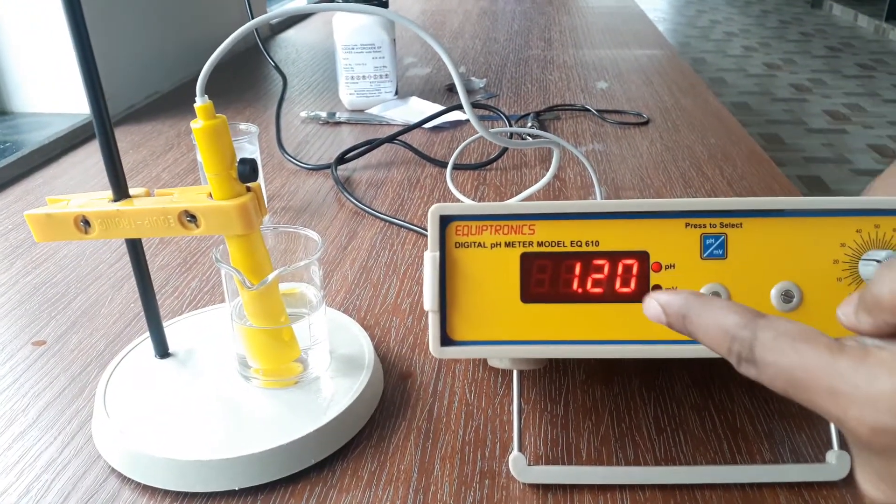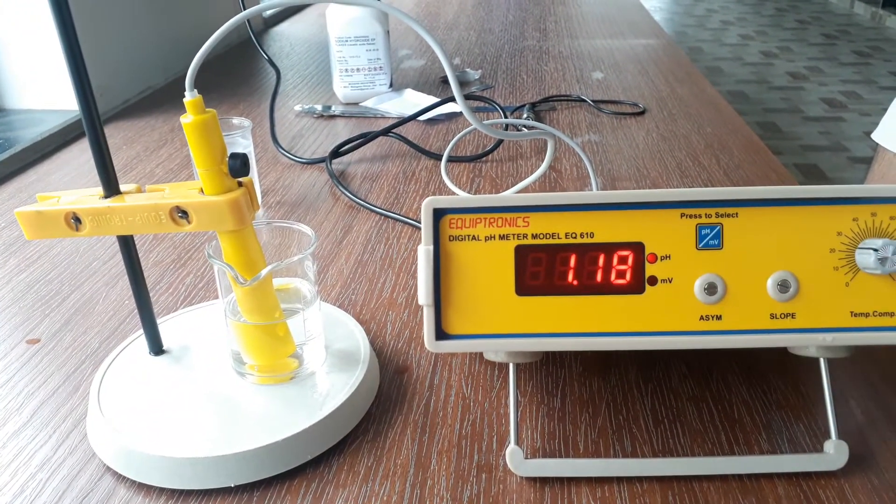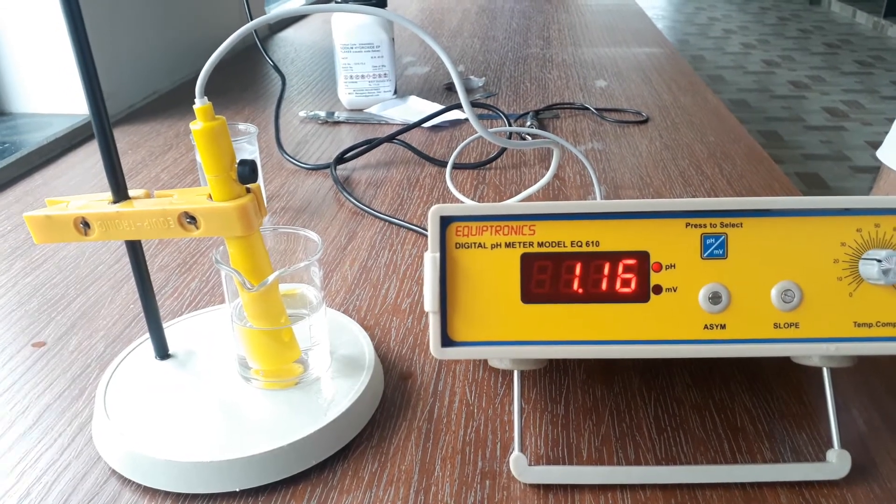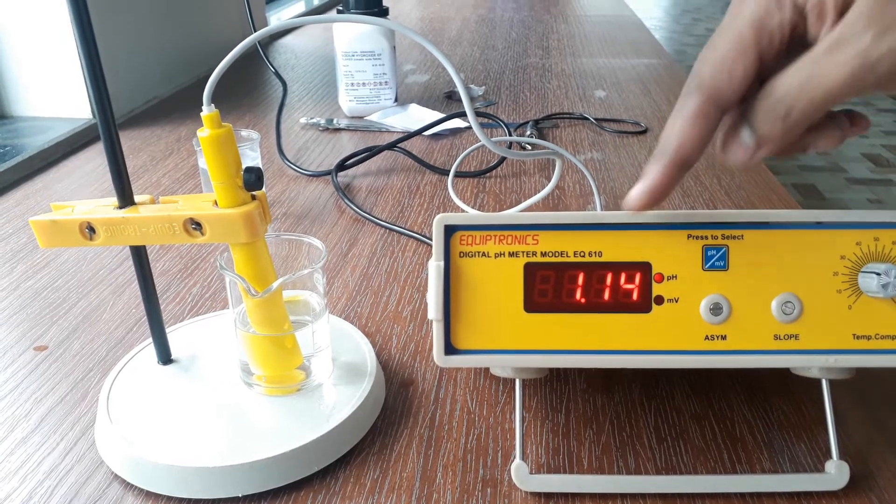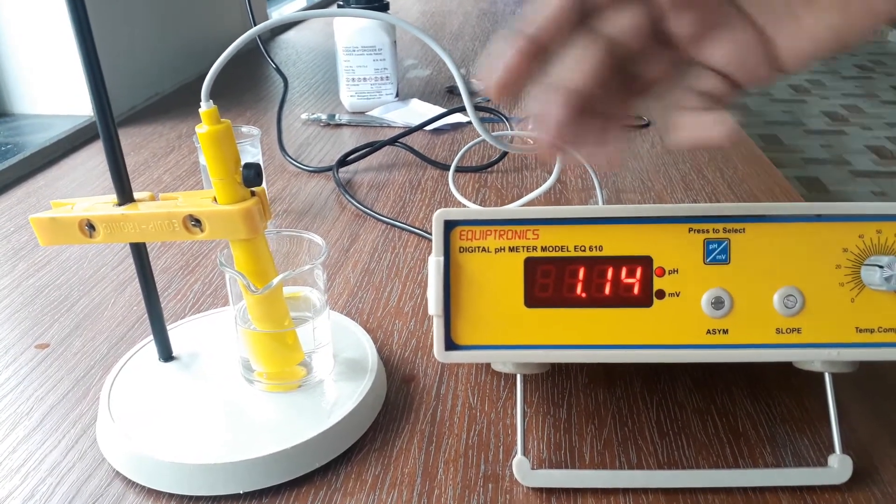Now you can see immediately the reading has changed, 1.9, 1.18. So if it was an unknown solution then you immediately came to know that it is acidic and you also came to know its pH 1.14.